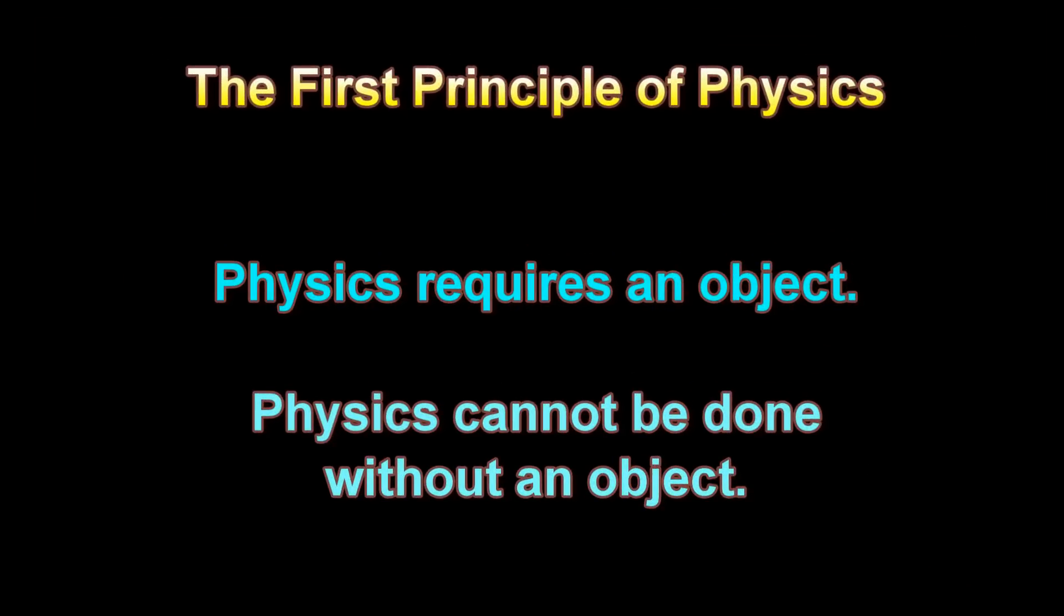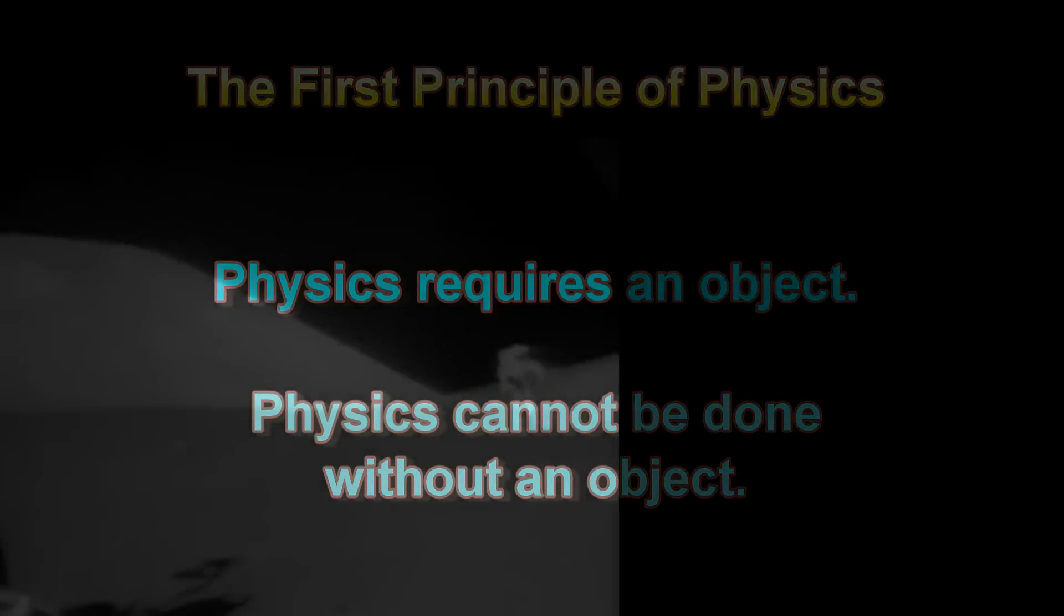Under the rope model of light and gravity, the galaxy rotation problem is a no-brainer. It's kindergarten stuff. We begin by stating the first principle of physics. Physics requires an object. You can't do physics without an object. Now that we have squared that away, we merely have to determine what invisible objects underlie gravity and electromagnetism.